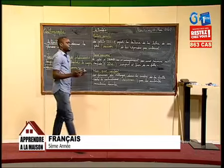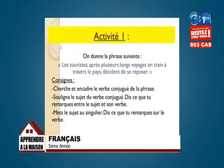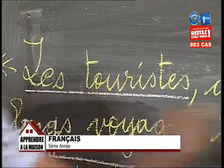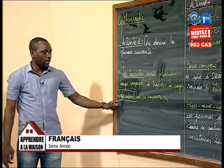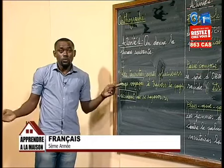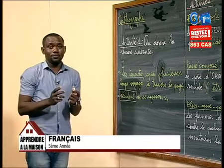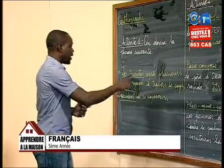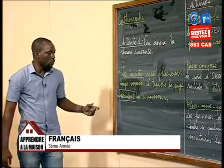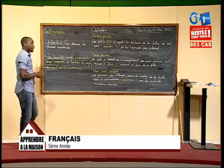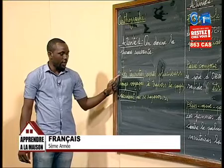Après, dans la consigne, on nous dit de regarder correctement le sujet et le verbe et de dire ce que l'on peut remarquer. Lorsque je regarde mon verbe encadré et mon sujet souligné, je remarque qu'il y a plusieurs autres mots entre le verbe et son sujet. Je me rends donc compte que le sujet et le verbe ne sont pas rapprochés. Ils sont éloignés parce que séparés par plusieurs autres mots dans la phrase. Donc je dis : les touristes, ici, est un sujet éloigné.